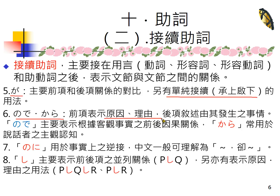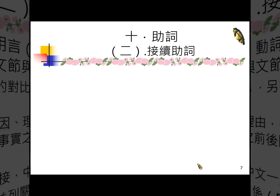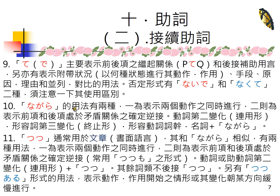逆接的还有けれども，这是最常用的一个逆接接续助词，表示但是，会话常用けど、けども、けど。还有が，が也是常用的接续助词，主要也是逆接，但另外它有个单纯接续，这不是逆接的用法，这个要请同学注意一下。から跟ので表示原因理由，这个也常常看到、常常用到——因为怎么样所以怎么样。